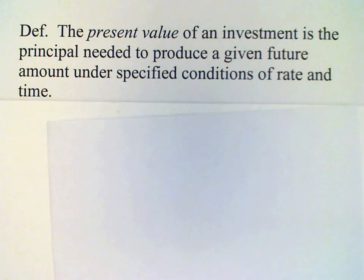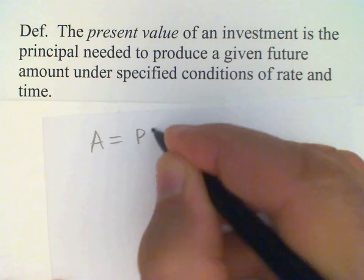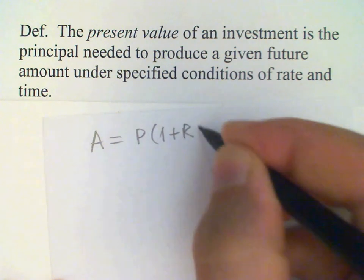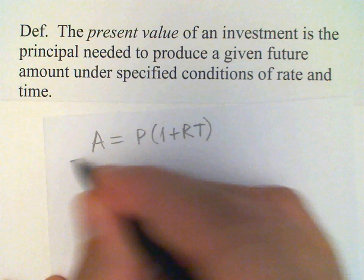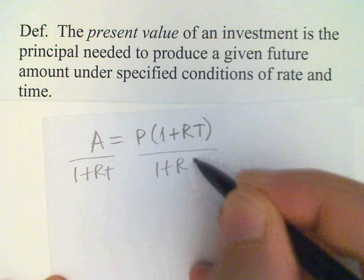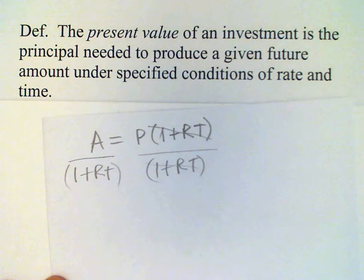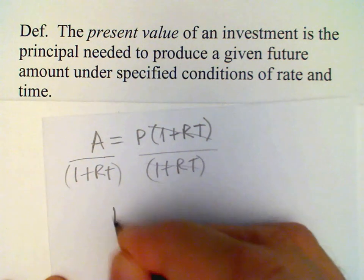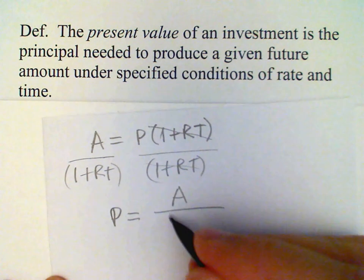So let's see how that formula is derived from our previous formula. Our previous formula said A equals P times (1 + RT). If we want to solve this for P, all we need to do is divide each side by (1 + RT). This quantity (1 + RT) will cancel on the right hand side. And so our formula then for present value is P equals A divided by (1 + RT).